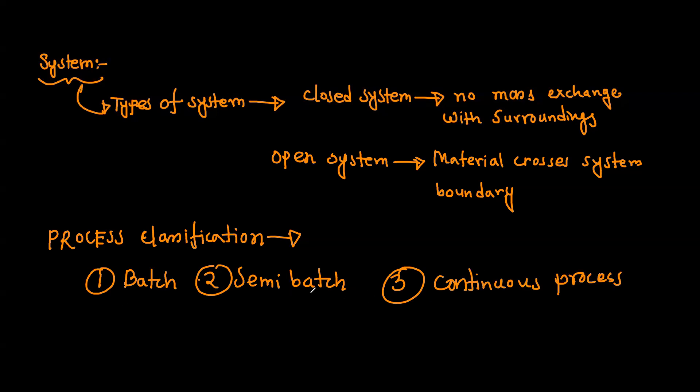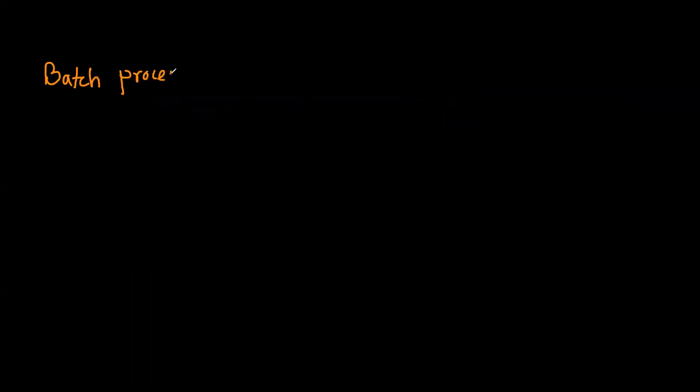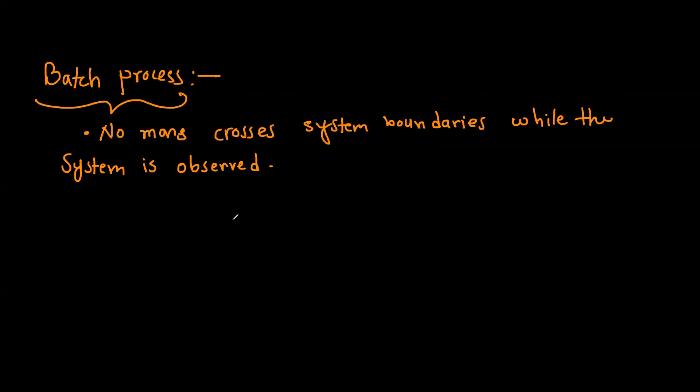Let's discuss batch process. In batch process, we can say no mass crosses the system boundary while the system is observed. That means when we observe, at that particular time, no mass crosses the system boundary.